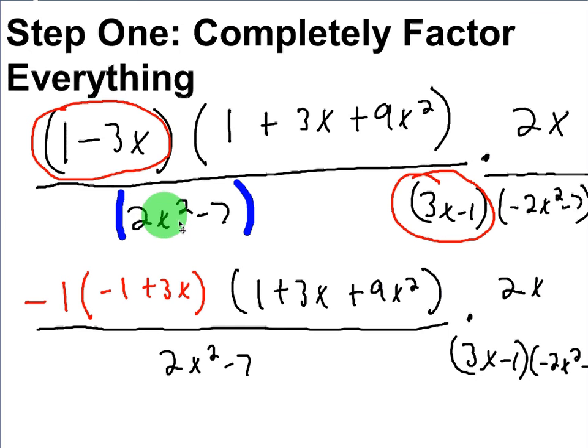Now, if it was just 2x squared, you could reduce that. But this has another number next to it. You can't do that. You have to leave it that way.